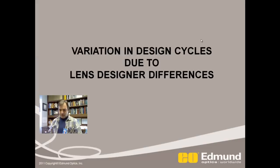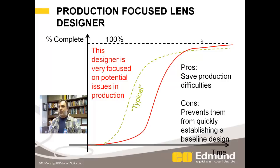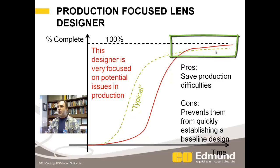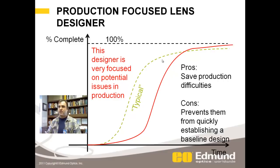Now let's talk about variations in these design cycles from lens designer to lens designer. First, let's talk about the designer that's focused on production. He's thinking ahead to that production phase — he starts out with a set of requirements and is really concerned about production. He's the red line here, compared to the typical green line we've been discussing. Because he puts a bunch of constraints in from the start along with focal length requirements, his time to get an initial design takes a really, really long time. The upside is he may have a smaller cycle time during the manufacturability phase.